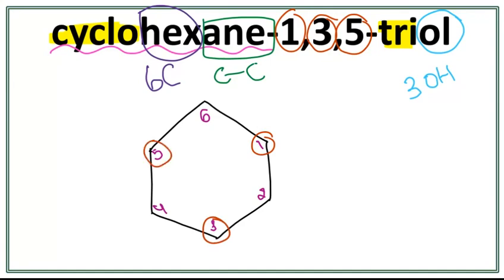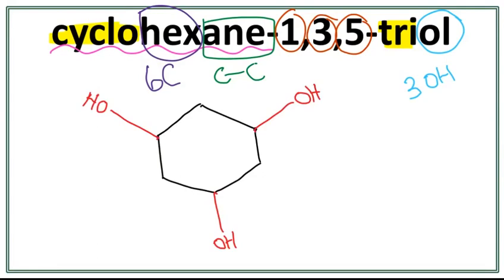So let's get rid of these numbers and attach the hydroxyl group on the first, third, and fifth carbon. This is the structure for cyclohexane-1,3,5-triol.